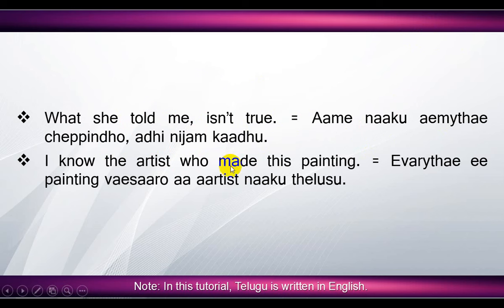'I know the artist who made this painting' means 'yavarai te ee painting vishalanga, aa artist naaku telusu'. Here, 'I' means 'nenu', but 'I know' means 'naaku telusu'. 'The artist who made this painting' means 'yavarai te ee painting vishalanga'.